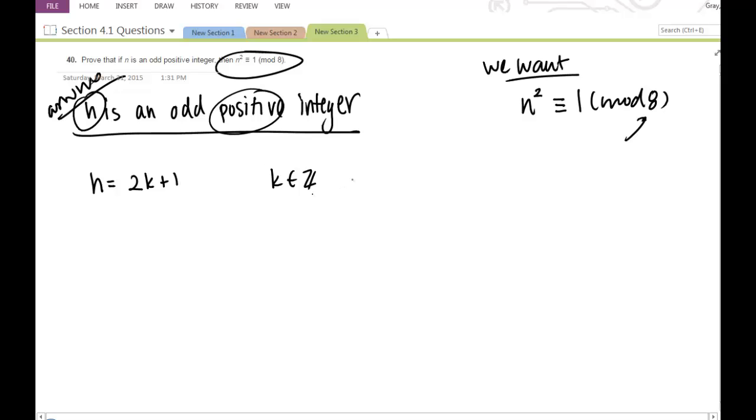If this is positive, then k must be greater than or equal to 0. It could be equal to 0. My first odd positive integer is 1, so that's where k will start out with. Now let's see. Let's see what we get when we take n squared, because we're trying to get to a conclusion about n squared.